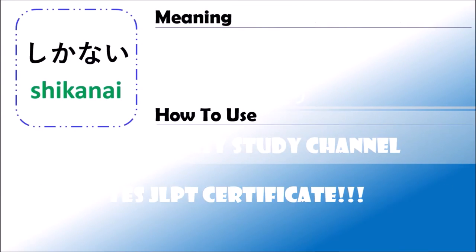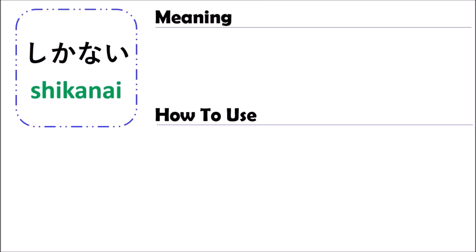The grammar of しかない (shikanai) means 'have no choice but to do something.'